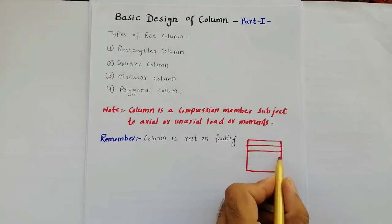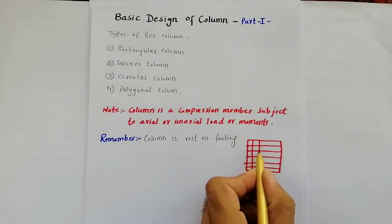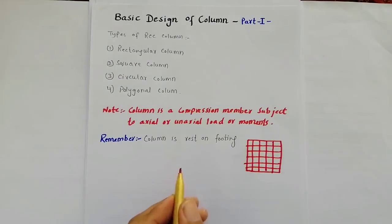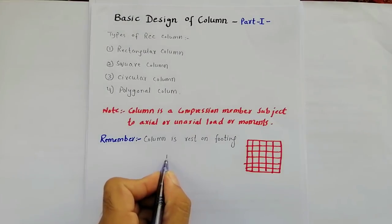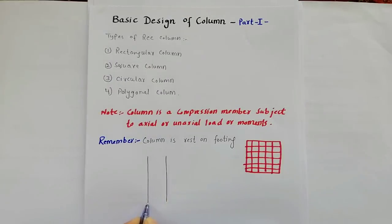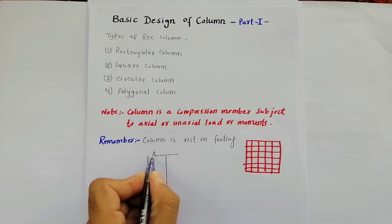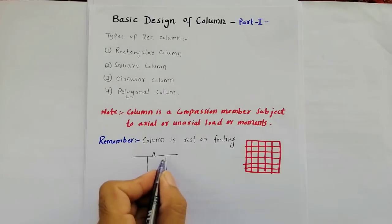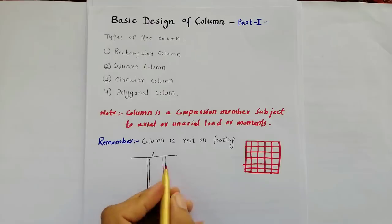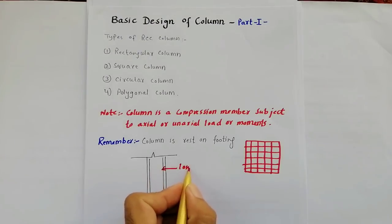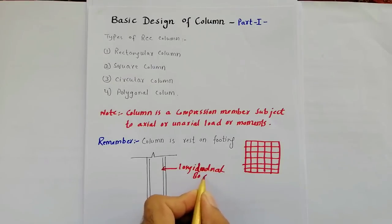You can see here, this is called footing. These are main bars and distribution bars in footing. Now I will draw the column and also its cross section. This is elevation for column.